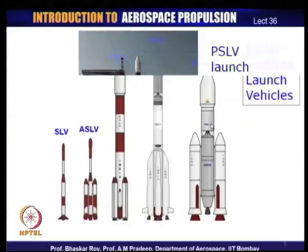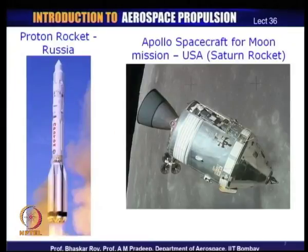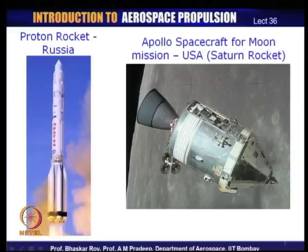In Indian rockets as well, you can see a number of stages: first stage, second stage, third stage — sometimes four stages — and then the payload on top, which is the satellite. So the whole vehicle is the launch vehicle and at its tip is the satellite. The US has used these to send man to the moon, Russians have done that too, and they also send various satellites to orbit, just like our Indian program.